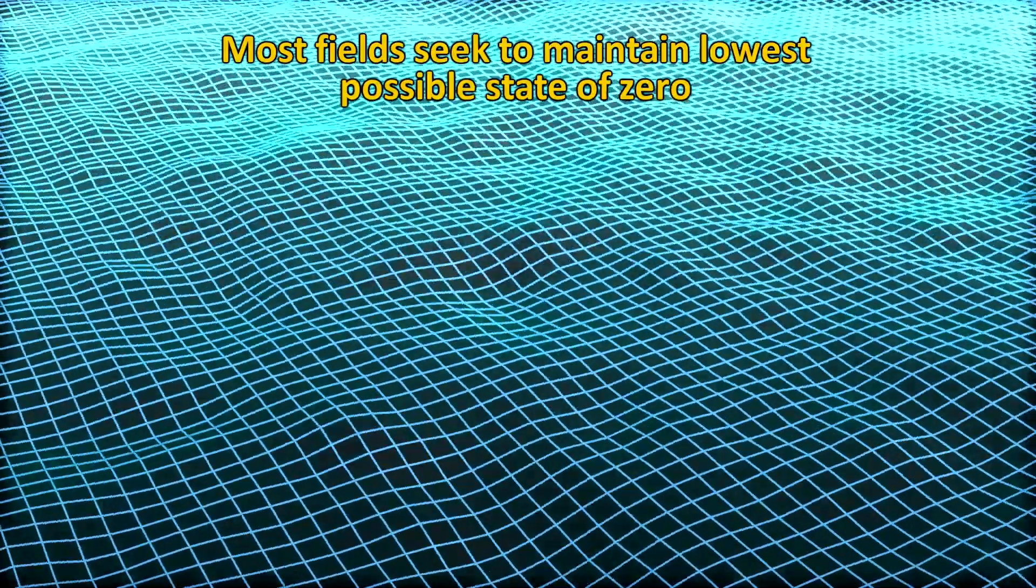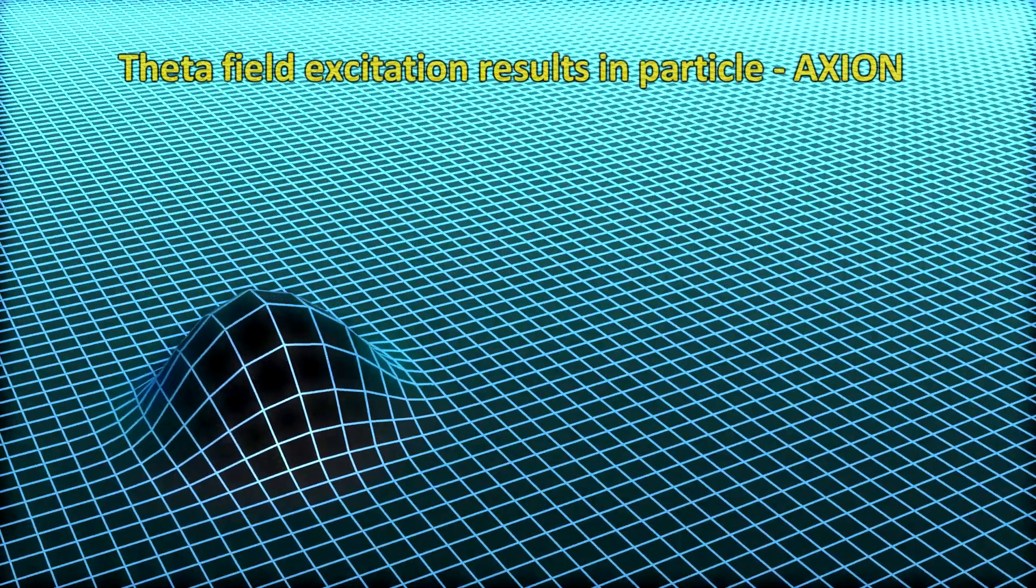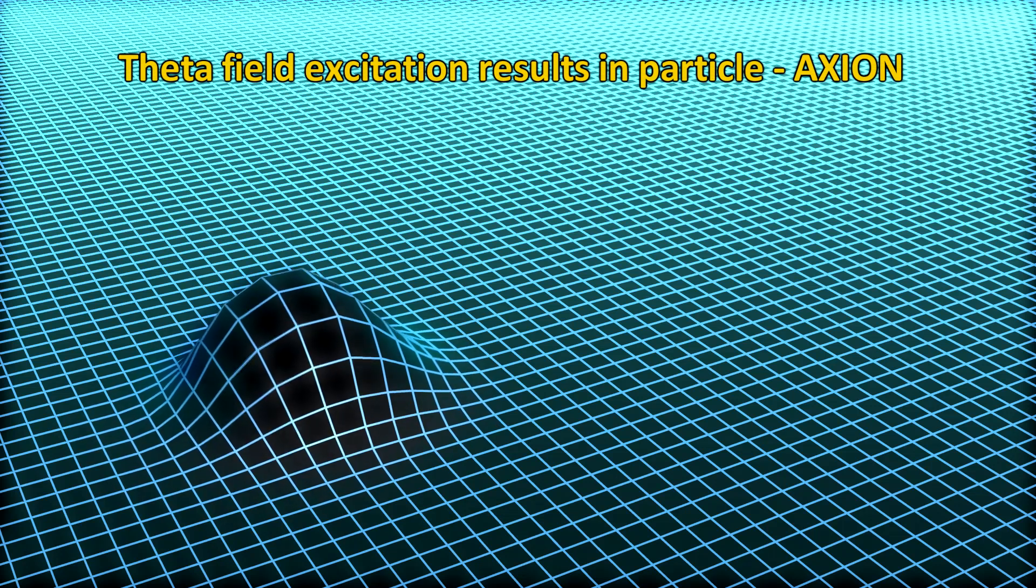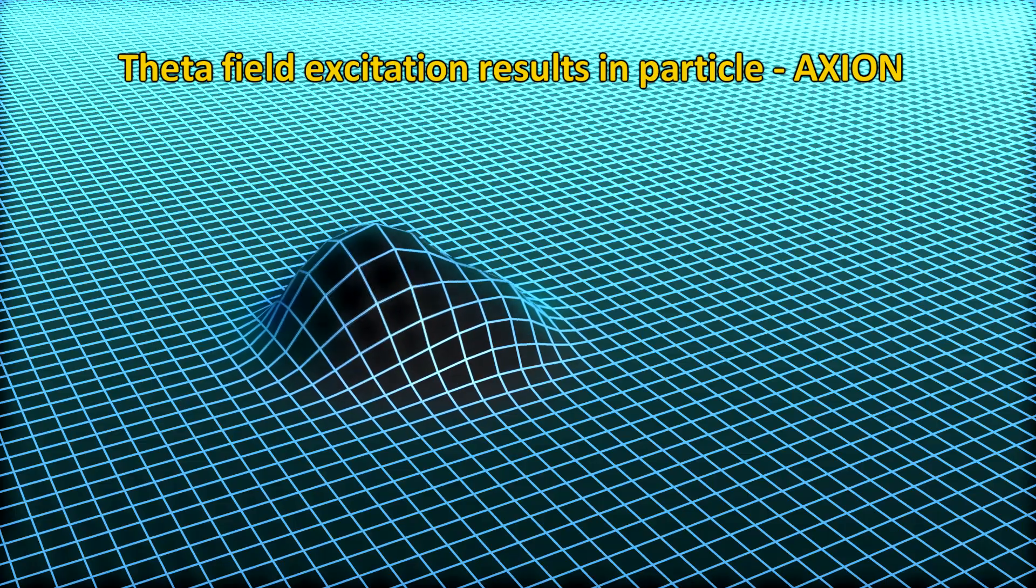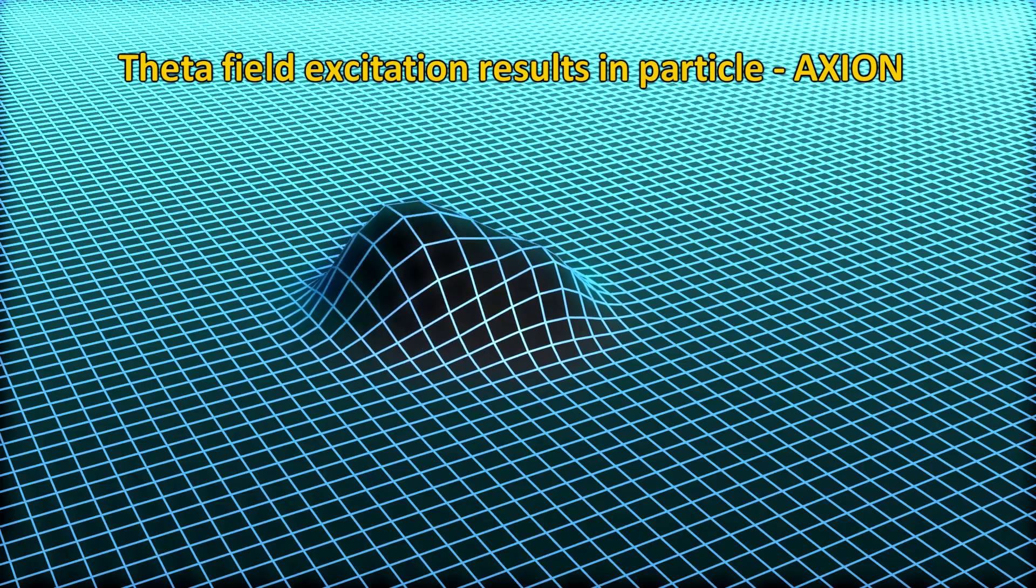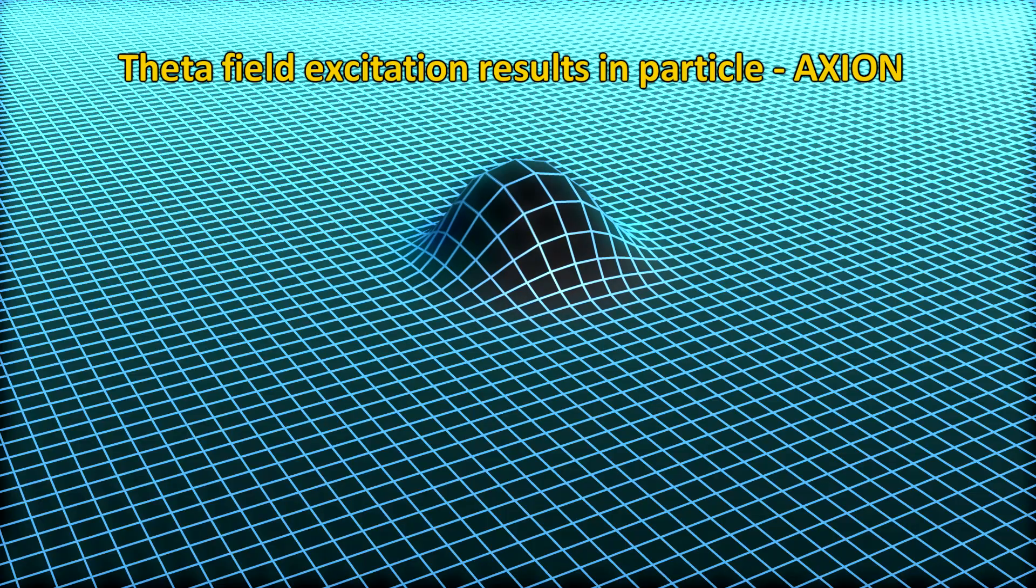This particle of the theta field is called the axion. But due to the nature of the theta field, the axion is predicted to have an extremely low mass. There are a couple of reasons why axions make an attractive dark matter particle candidate. First, they do not require the existence of supersymmetry. And they can be placed in the standard model as a much lighter cousin of the Higgs boson.